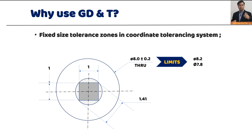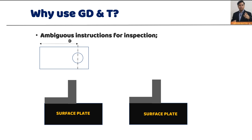So 7.8 is the worst case for assembly — that's where our tolerance is locked. But as the hole becomes larger, we get additional tolerance that could be used for location. However, we can't do that in the coordinate tolerancing system because there's no such methodology. In GD&T, this is achieved through the concept of bonus tolerance and zero tolerance at Maximum Material Condition, which lets us convert extra size tolerance into location tolerance — further reducing production cost.